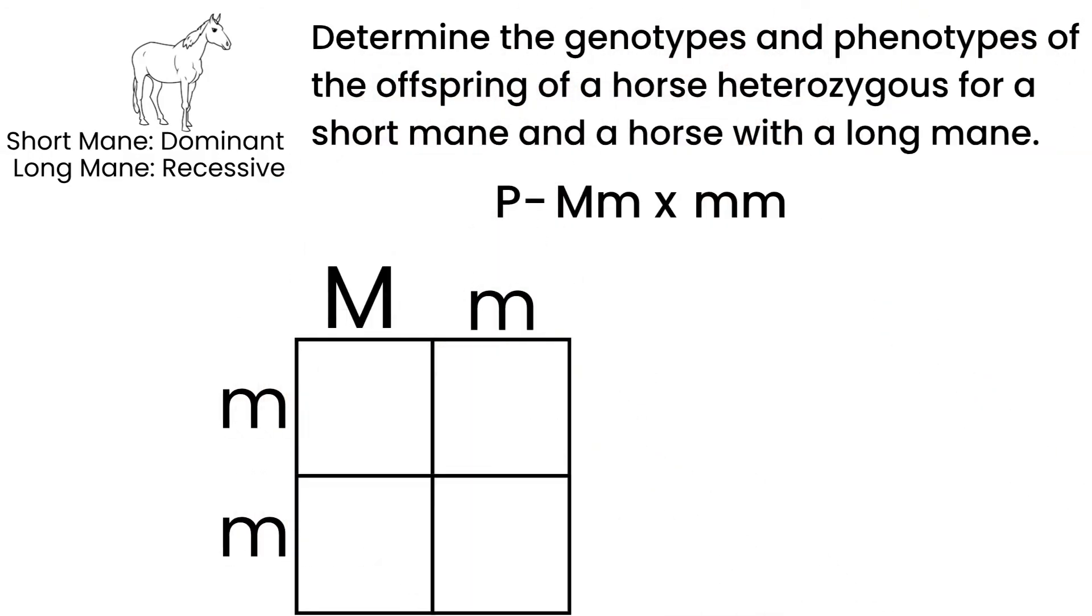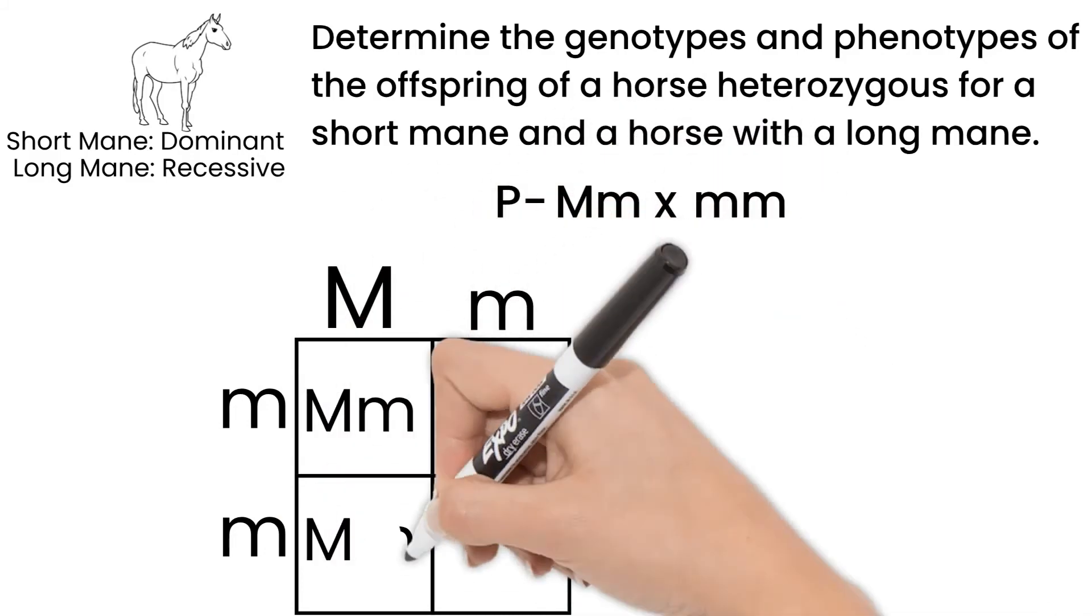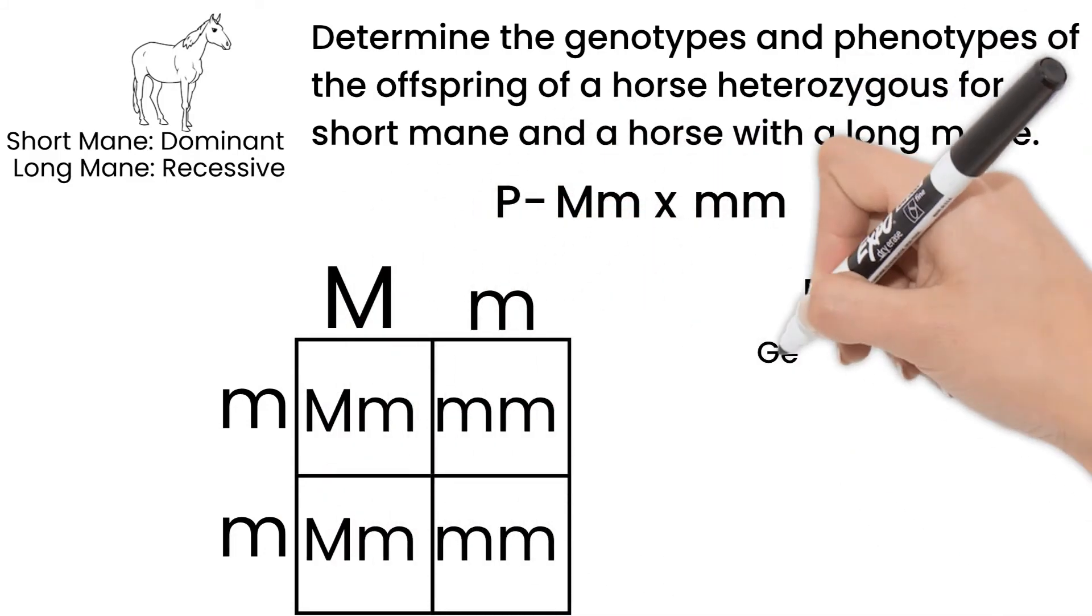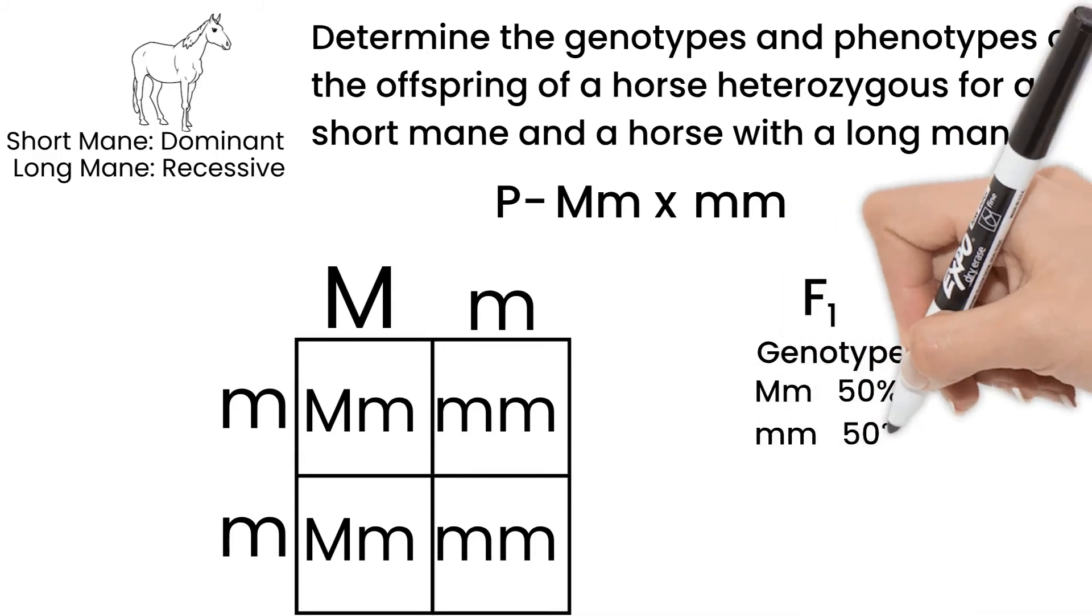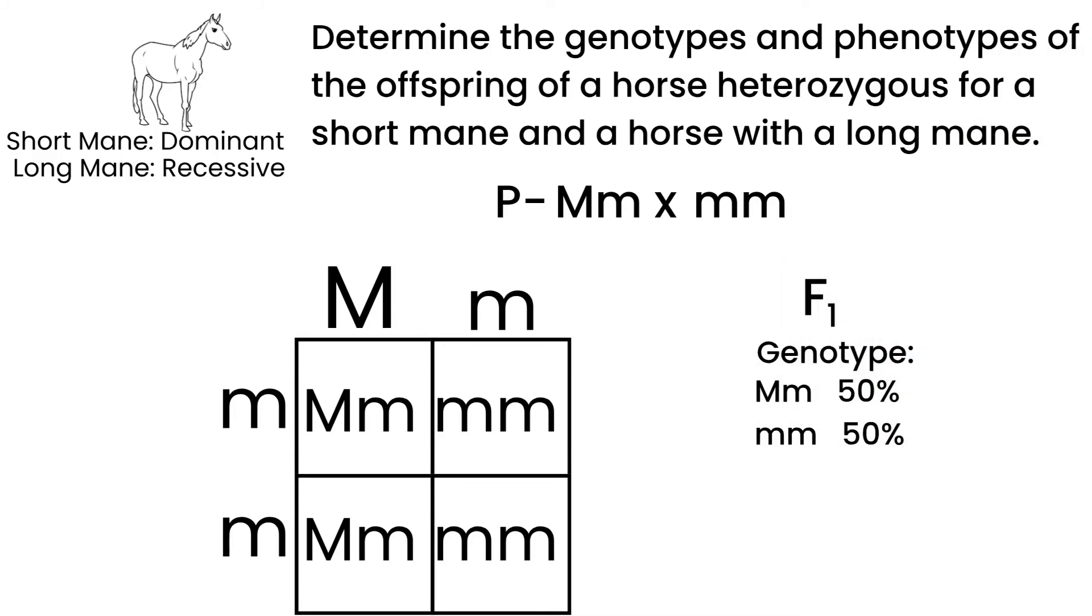Go through the Punnett square with them, and our F1 generation genotype would be 50% heterozygous and 50% homozygous recessive. The phenotypes would be 50% short and 50% long.